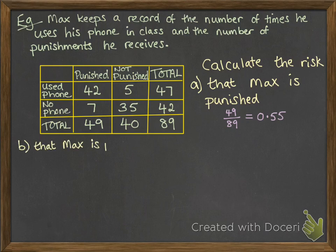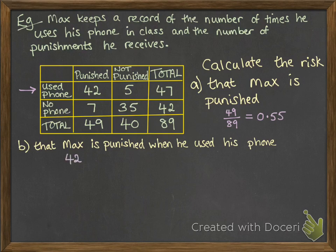Now calculate the risk that Max is punished when he used his phone. So we're restricting this down to only looking at when he used his phone. What's the chances that he got a punishment there? So it's that 42 divided by the 47, because we're only looking at the times when he actually used his phone. So the chance of punishment in those situations was 0.8936. Now notice I'm turning these all into decimals. That's what we do when we do risk. And we try to keep it to four decimal places as well, so that we don't lose any accuracy.